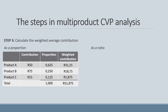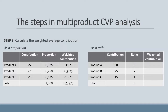Now the ratio method — we take the contribution and multiply it by the product's component in the ratio. Product A's contribution multiplied by its sales ratio component of 5 gives a weighted contribution of 250 Rand. Doing the same for products B and C gives a total weighted contribution of 415 Rand. Notice that dividing 415 by 51.875 gives 8, showing the proportion method represents a batch of 1 unit while the ratio method represents a batch of 8 units.